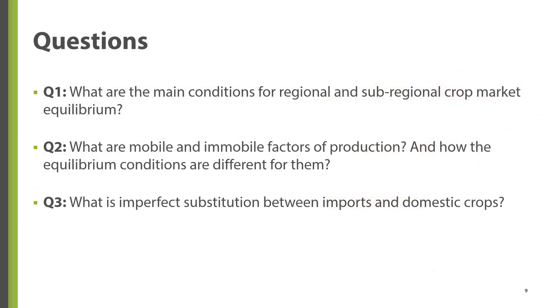If you're interested in learning more about this topic, please review Chapter 4 of the Simple G book, where you'll learn about regional crop market equilibrium, local geospatial input market equilibrium, and imperfect substitution in traded commodities.